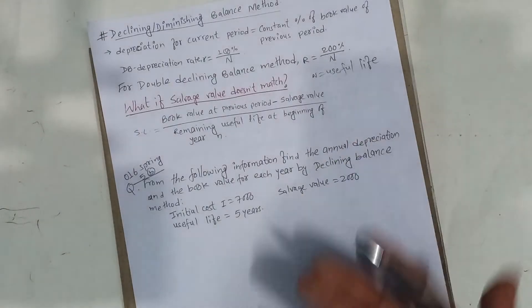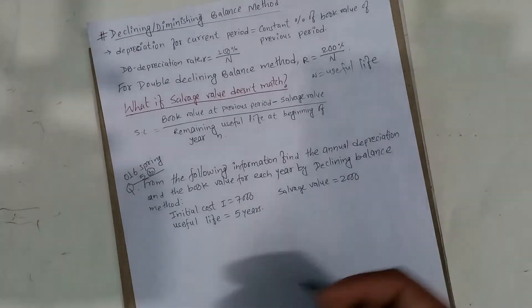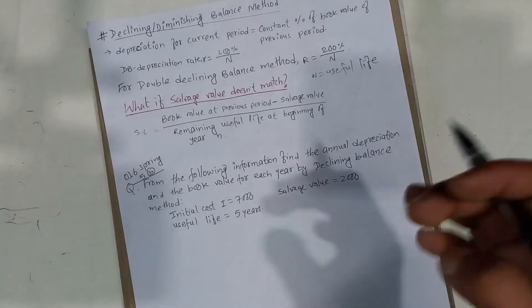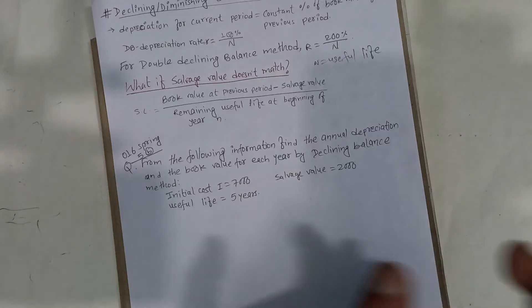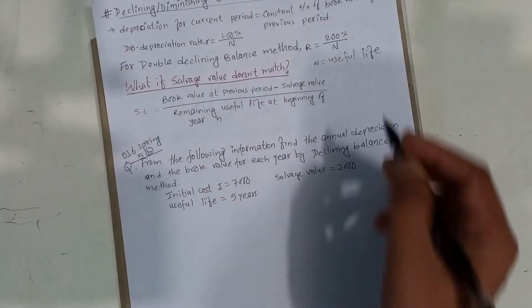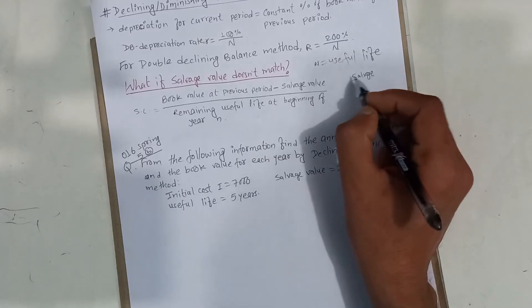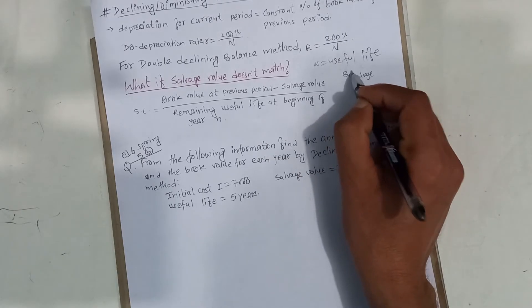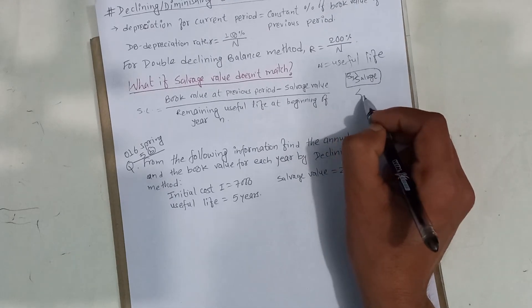Now, what is the problem? We consider the salvage value and the depreciation rate. The last value in the final year is the salvage value, and it must match. What is the salvage value? Is it the same as the book value? Which value is greater, and which is less?